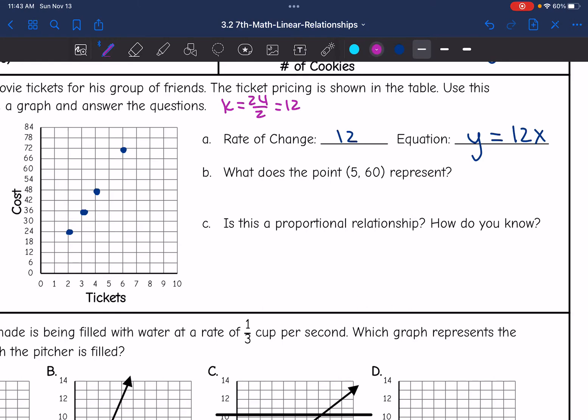Now B says, what does the point 5, 60 represent? Let's go ahead and graph that. 5, 60. So that would mean that five tickets cost $60.